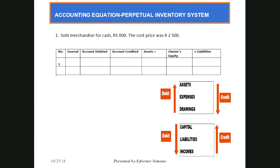We are using the perpetual inventory system, so we need to be careful when identifying transactions. I want us to start by reading so that we can understand what is going on. The first transaction says: sold merchandise for cash. We need to know that we are selling merchandise — that's the first thing. And we sold for cash.